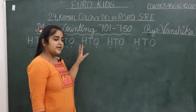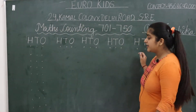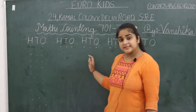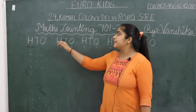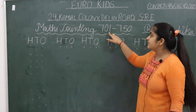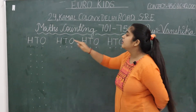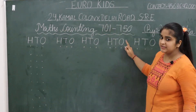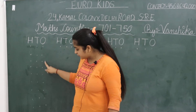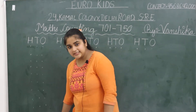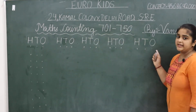Now we will not forget counting. The pattern will be the same as before. Parents are requested: you have to add a heading '701-750' and HTO to every line. Then you have to add dots in the first line, and the rest of the lines are just traced on top.